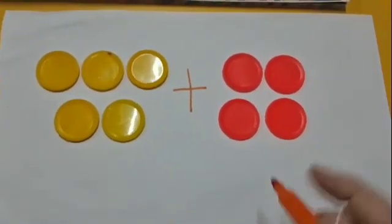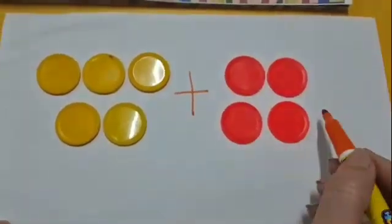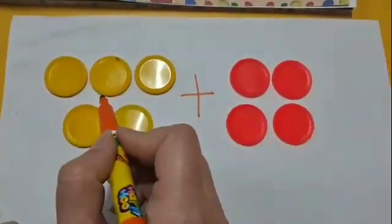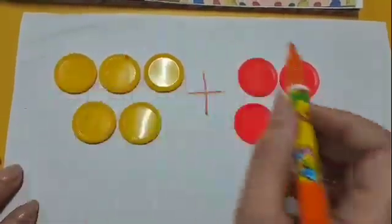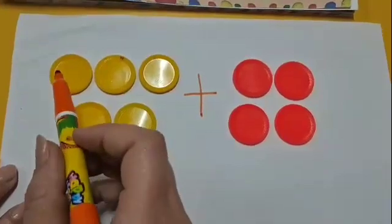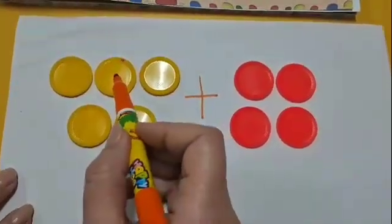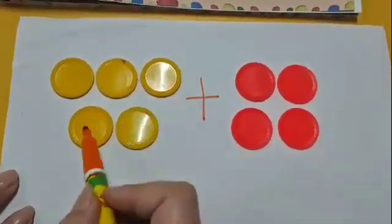Now I will add these red counters to these yellow counters. So let's count all these counters: one, two, three, four.